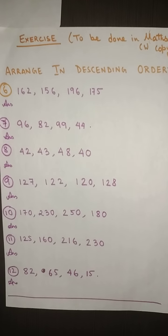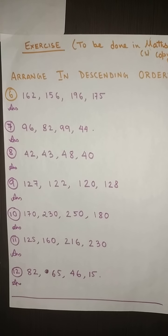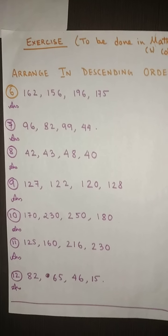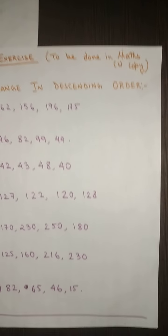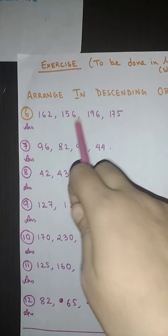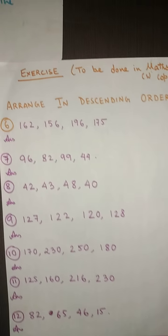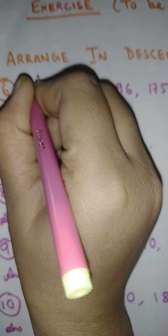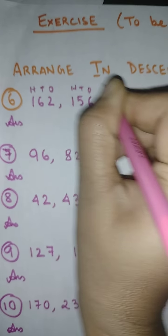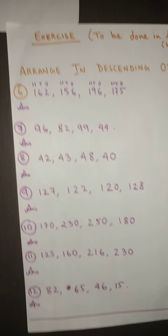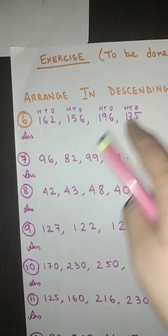After this, last class we started with the exercises and I hope you have done those exercises by yourself. Today we will be continuing with the same exercises. Arrange in descending order: the first set is 162, 156, 196 and 195. Write 'TO TO' on the top — that will be helpful for you to do this descending order. The numbers in the hundreds place are all same so you have to compare the numbers in the tens place.